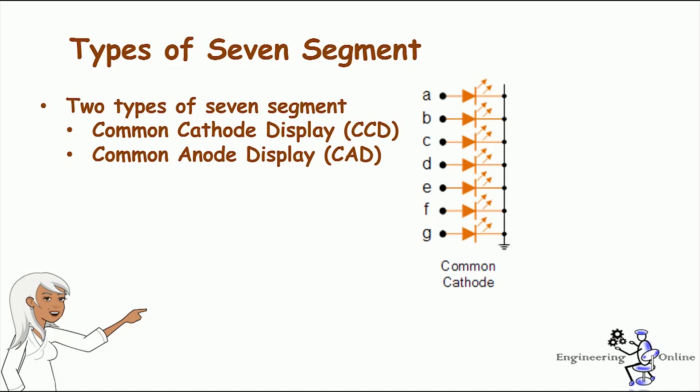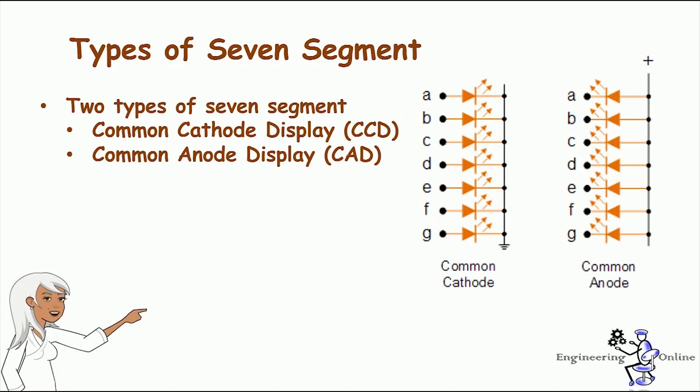Common cathode is the one we use in experiments mostly. In a common cathode seven segment display, all seven LEDs plus a dot LED have their cathodes connected to pin 3 and pin 8. To use this display we need to connect ground to pin 3 and pin 8, and then connect plus 5 volts to the other pins to make the individual segments light up. The following diagram shows the internal structure of the common cathode seven segment display.